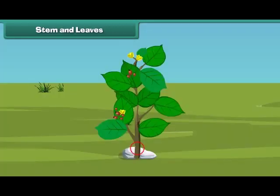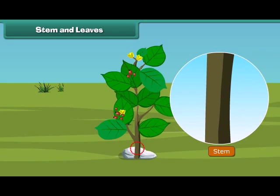The next part of the plant is the stem. A stem is the hard part of the plant which grows above the ground. It bears leaves, fruits and flowers. A stem also supports the plant.